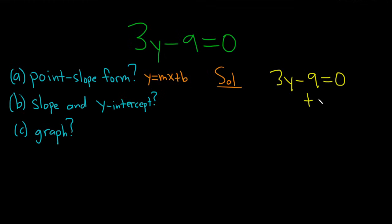So we can just add 9 to both sides, plus 9 plus 9, so we get 3y is equal to 9. We're almost done, now we can just divide by 3, and divide by 3. That gives us y equals 3.